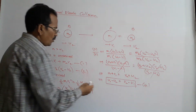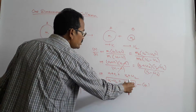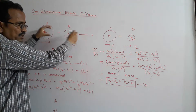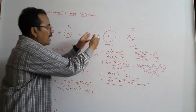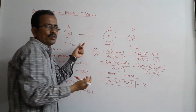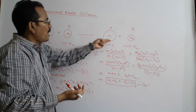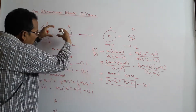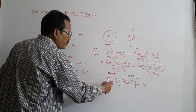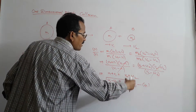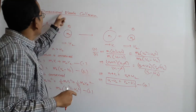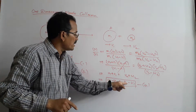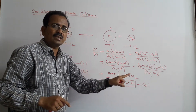From equation 4, U1 − U2 is the relative velocity of approach before collision, and V2 − V1 is the relative velocity of separation after collision. Before collision the spheres approach each other; after collision they separate. So in an elastic collision, the relative velocity of approach before collision equals the relative velocity of separation after collision. This is an important relation.